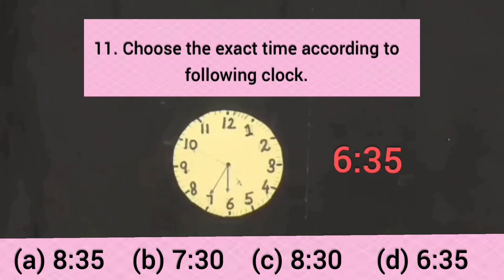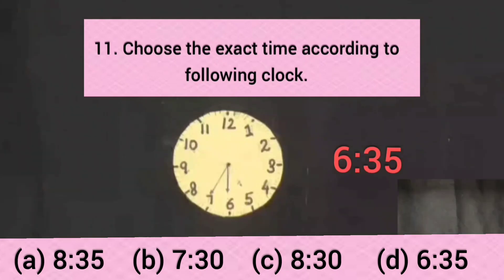Now students, option A is 8:35 — this option is incorrect. Option B is 7:30 — this option is also incorrect. Option C is 8:30 — this option is also incorrect. Option D is 6:35 — this option is correct. Only option D is correct, so I put a tick on option D.